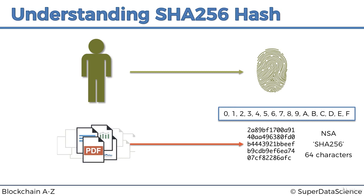Each character in the resulting hash takes up four bits, because 4 squared is 16, and 4 times 64 is 256 — that's how these numbers are all linked together. Importantly, this algorithm works not just for text documents; it works for any digital content. You could put a video, audio file, executable, or even a whole operating system into the algorithm and it will produce a SHA-256 hash fingerprint.